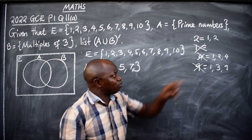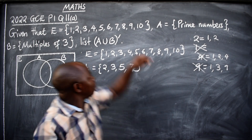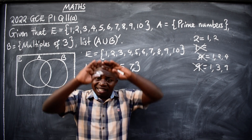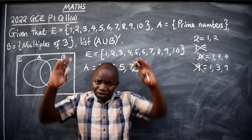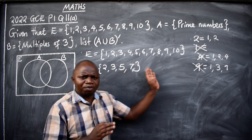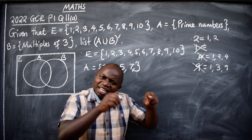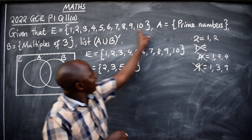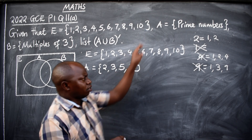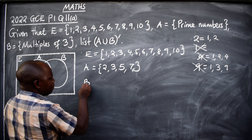Bear in mind that whatever you are getting for these two sets should come from the universal. That's the universe — it should come from there, not outside. Of course we have a lot of prime numbers — eleven, thirteen — but are they in here? No. It only ends up to ten. So this is Set A. Now we go to Set B.